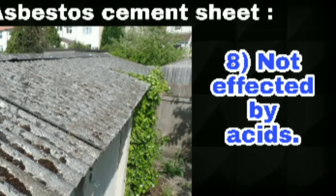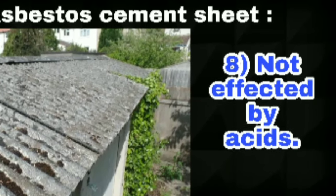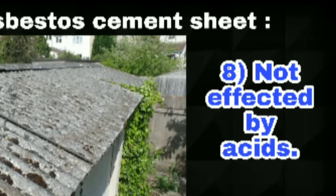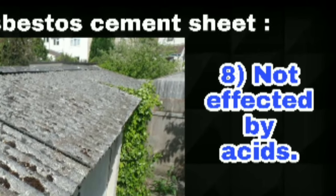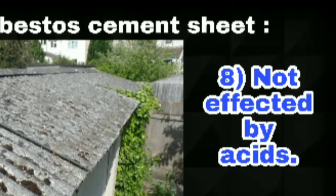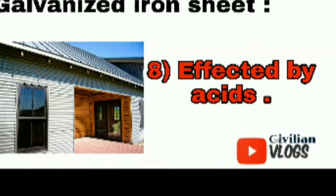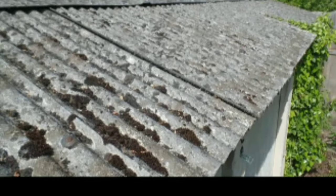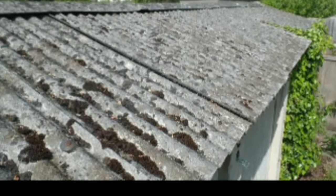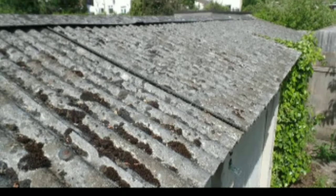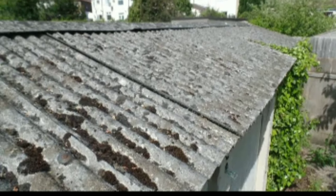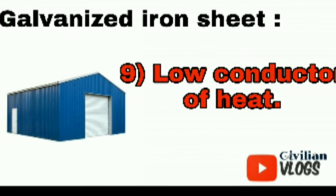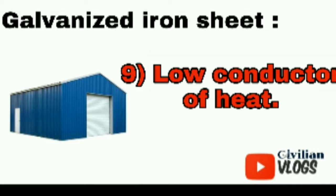The next point is: asbestos cement sheet is affected by acids — it will react and be affected. But galvanized iron sheet will not be affected by acids. The next point is heat conductivity: galvanized iron sheet is a good conductor of heat, while asbestos cement sheet is a low conductor of heat.